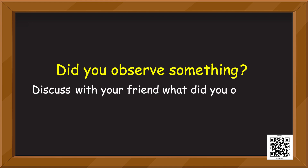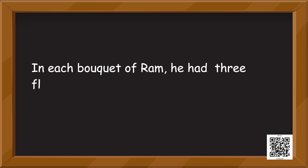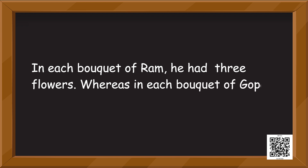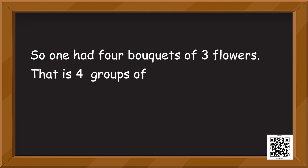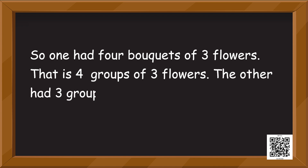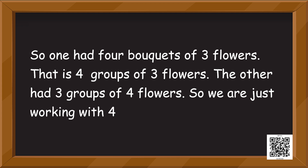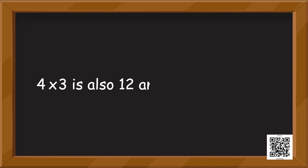Did you observe something? Even though Ram had four bouquets and Gopal had three bouquets, the total number of flowers is the same. In each bouquet of Ram there were three flowers, and in each bouquet of Gopal there were four flowers. So one had four groups of three, the other had three groups of four — we are just working with four and three. It doesn't matter where we write four and where we write three; the total will always be twelve. So four into three is twelve and three into four is also twelve.